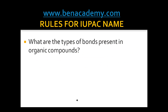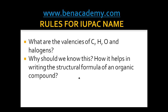To recap: there are 3 types of bonds between any two carbon atoms — single, double, or triple bond. The valency of carbon is 4, hydrogen is 1, oxygen is 2, and all halogens (chlorine, bromine, iodine) have a valency of 1.